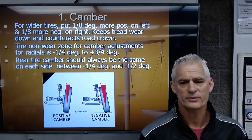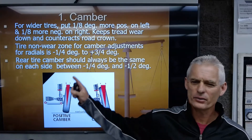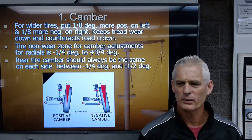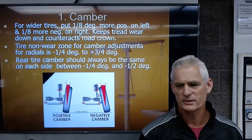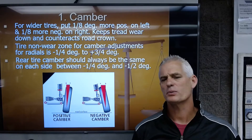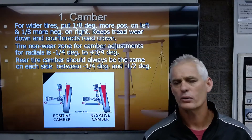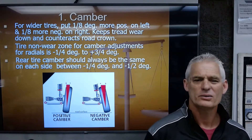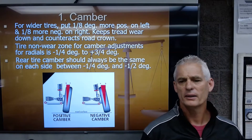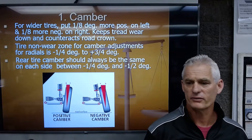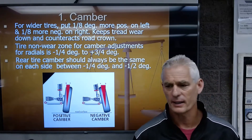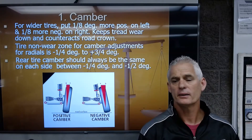The tire non-wear zone for camber on radials is negative quarter degree to positive three-quarter degree. Keeping camber in this range typically prevents significant tire wear. Rear tire camber should be the same on each side — about negative quarter to negative half degree for vehicle stability. Wide tires will wear more if camber reaches negative half degree.